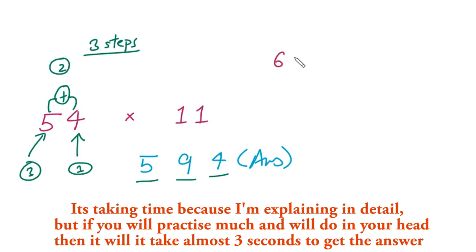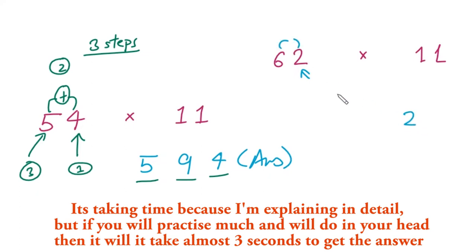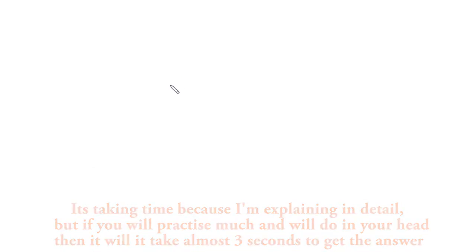Let's take another number: 62 multiplied by 11. First step: write the last digit, so we write 2. Second step: add 6 plus 2, which is 8. Third step: write the first digit, so we write 6. Our answer is 682. You can check it.